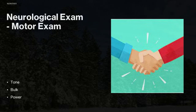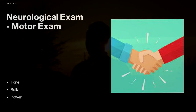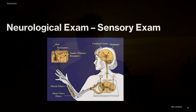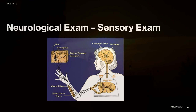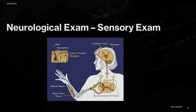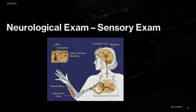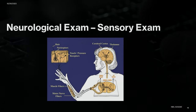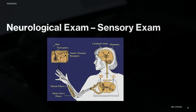The sensory exam involves evaluating the parietal cortex. For cortical modalities, have them close their eyes and place a penny in one hand — can they identify it without looking? Then a pen in the other hand — can they identify that? If so, the sensory exam is passed. Remember contralateralism: the right parietal lobe processes sensory input from the left side, and vice versa.